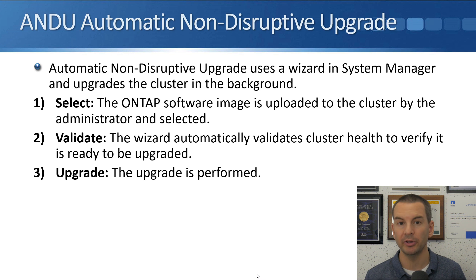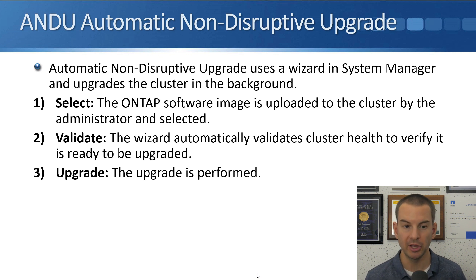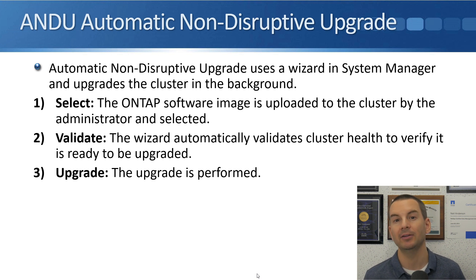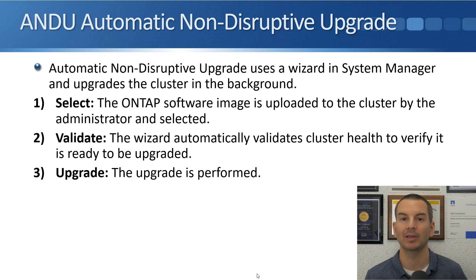The way we normally do the upgrade is using ANDU — the Automatic Non-Disruptive Upgrade — which uses a wizard in the System Manager GUI. There are three stages in the wizard. The first stage is Select: the ONTAP software image is uploaded to the cluster by the administrator. You've already downloaded the new ONTAP software image from the NetApp website and copied it to an HTTP or FTP server. In this first wizard stage, it's uploaded from that server to the NetApp storage system, and you specify the version of ONTAP you want to upgrade to. You then click Next.